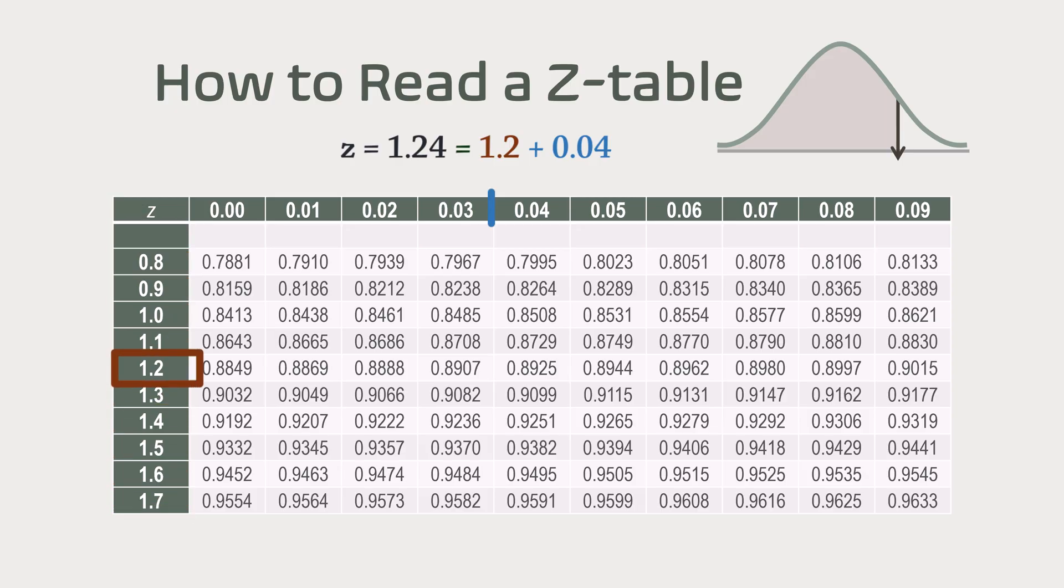Move across to the column labeled 0.04. At the intersection, we find 0.8925. That means 89.25% of all values fall below a z-score of 1.24.